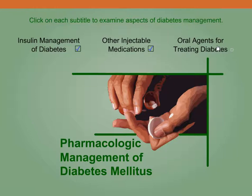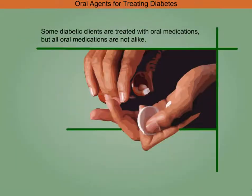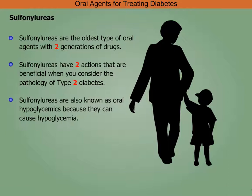Oral agents for treating diabetes: some diabetic clients are treated with oral medications, but all oral medications are not alike. Sulfonylureas are the oldest type of oral agents, with two generations of drugs.